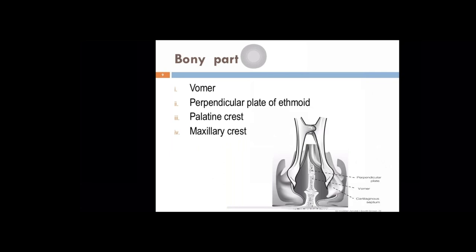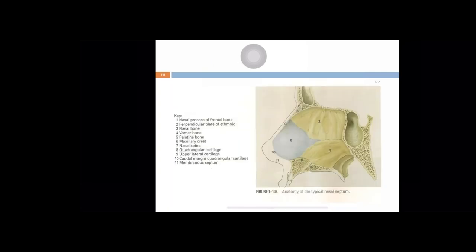The bony part consists of the vomer, the perpendicular plate of ethmoid, the palatine crest, and the maxillary crest. Here is a pictorial representation: the cartilaginous part — the quadrangular cartilage — the perpendicular plate of ethmoid, and the vomer.